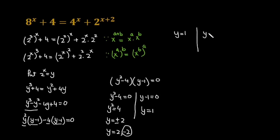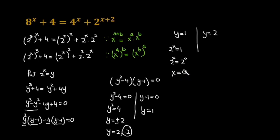So we have got two values of y: y equals 1 and y equals 2. Now replacing back, since y equals 2 raised to the power x, when y equals 1, we have 2 raised to the power x equals 2 raised to the power 0, so the bases are the same and we can equate the powers. By the law of exponents — if x raised to the power a equals x raised to the power b, then a equals b — therefore x equals 0.